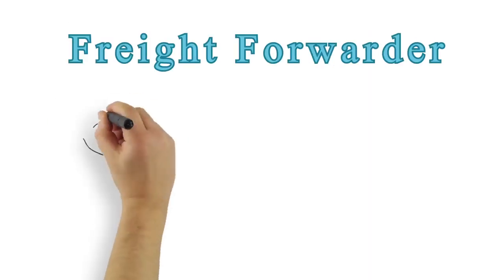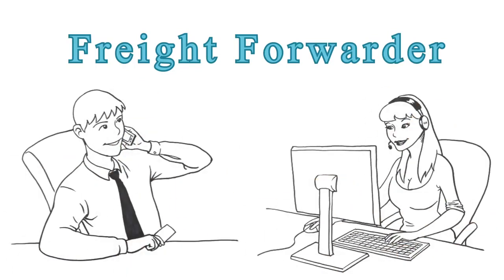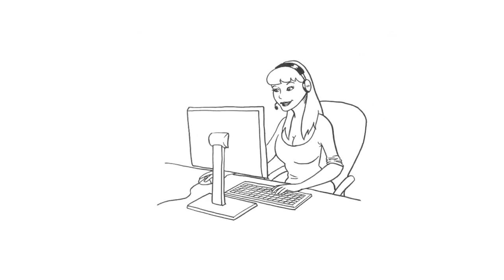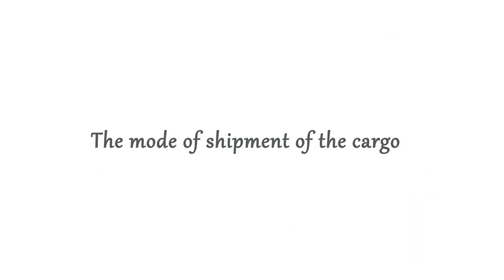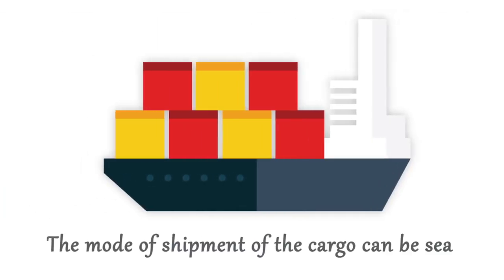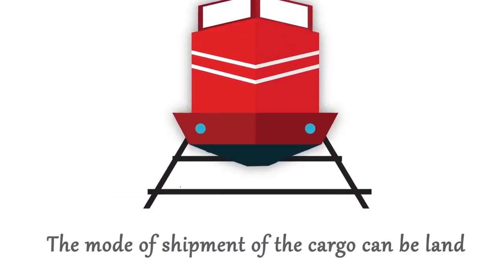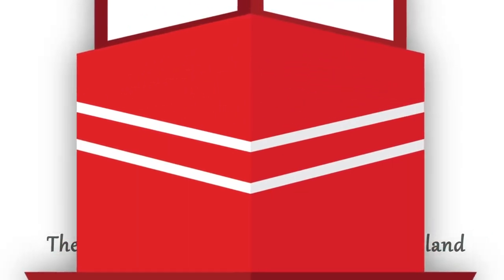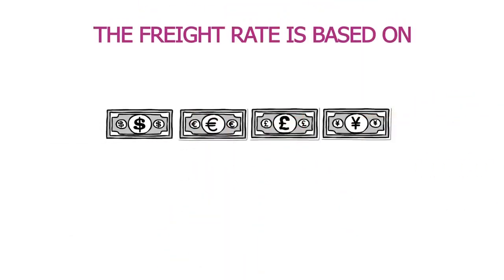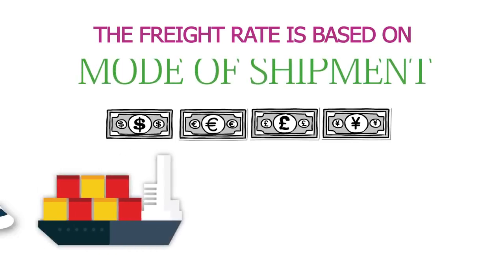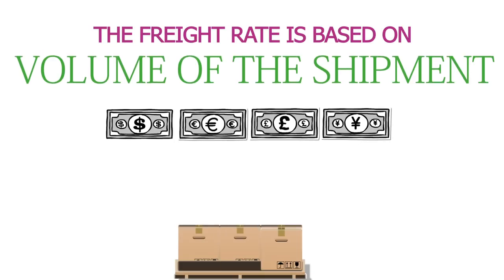Step 1: Freight Forwarder. Get in touch with a Freight Forwarder. Freight Forwarders are like ticketing agents for cargo shipments. The mode of shipment of the cargo can be sea, air, land, or even multi-modal. The Freight Rate is provided by the relevant Freight Forwarder based on the mode of shipment, destination port, and the volume of the shipment.